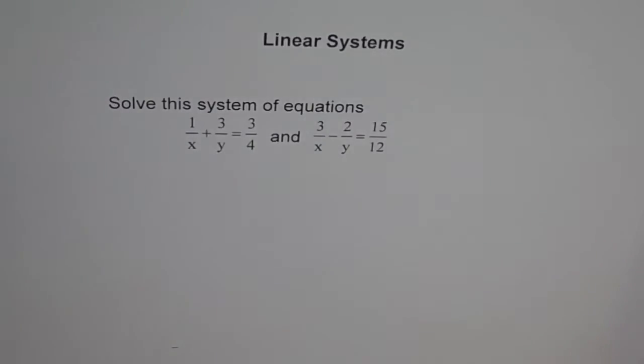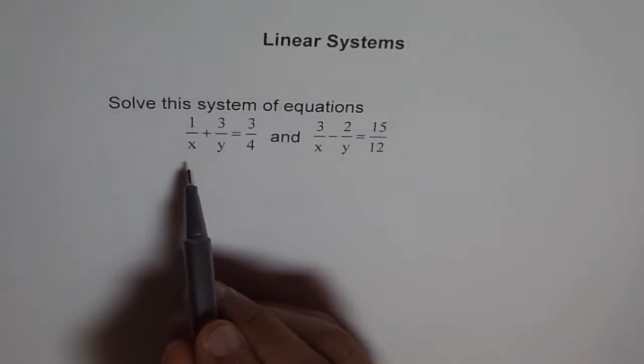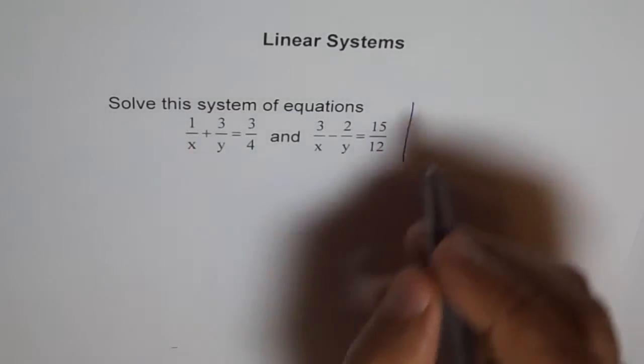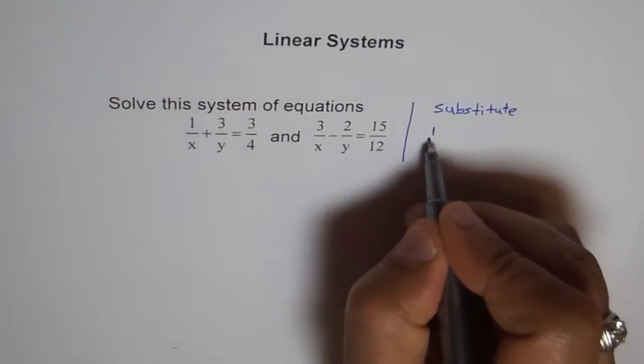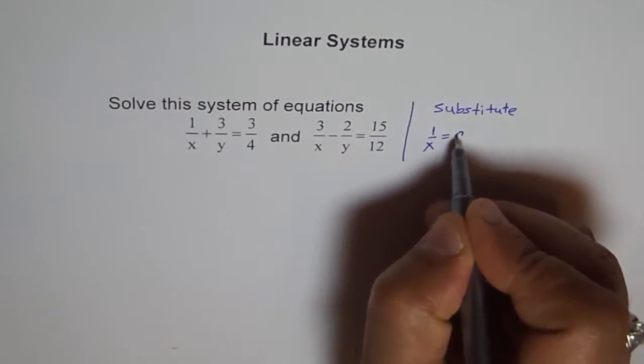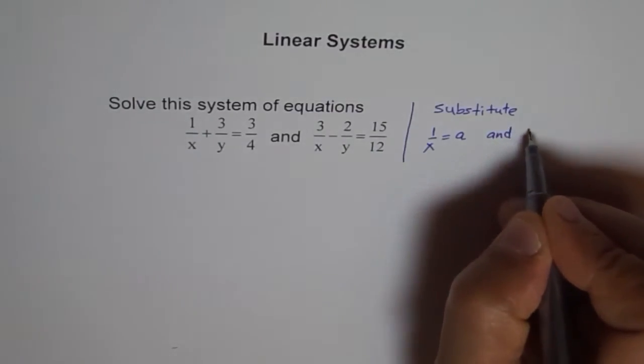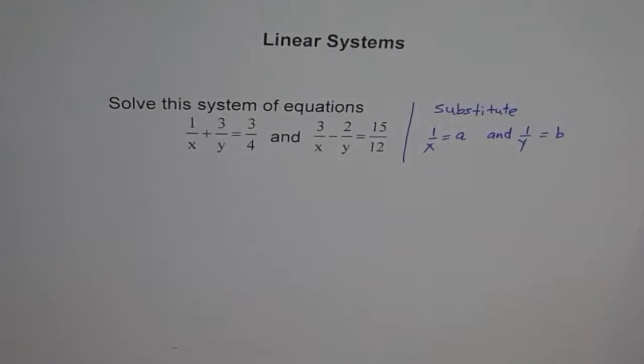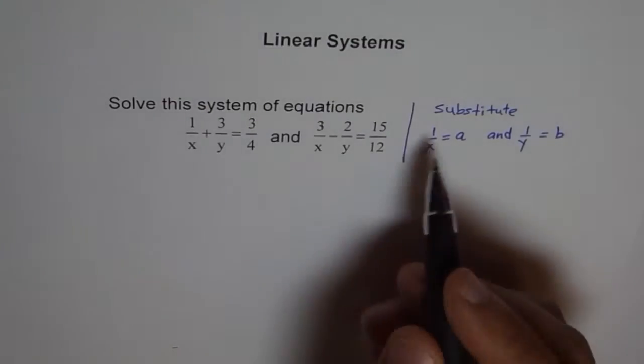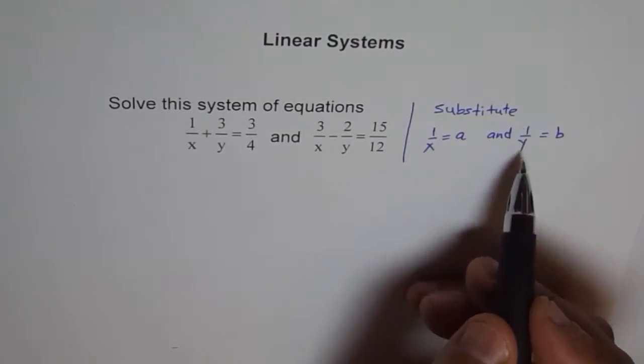So here, what we do is follow a strategy to make it linear and then solve it. Our strategy in this case is substitution. We'll substitute 1 over x as A and 1 over y as B. Let's see what happens after we substitute like this.